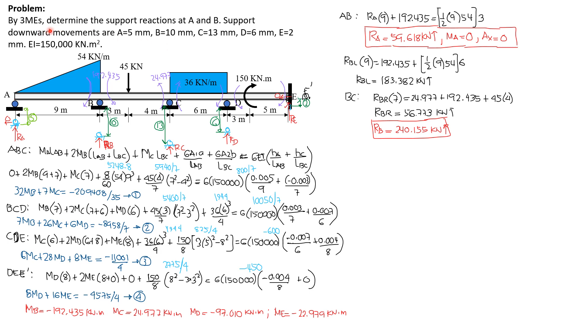By three-moment equations, determine the support reactions at A and B. Support downward movements are A: 5mm, B: 10mm, C: 13mm, D: 6mm, and E: 2mm.